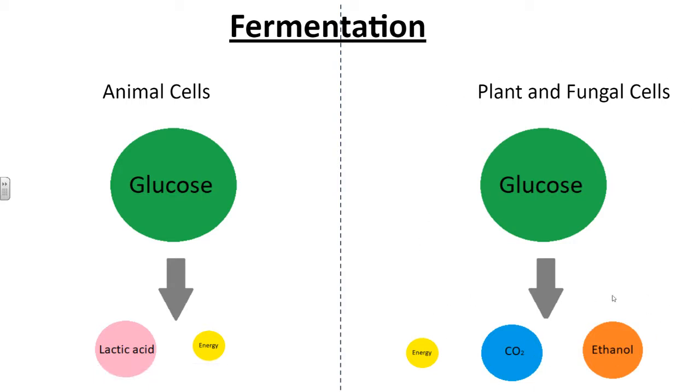This process on the right is how we make all alcoholic beverages. Your beer, your wines, your whiskies, gins and rums all come from fermentation of plant and fungal cells.